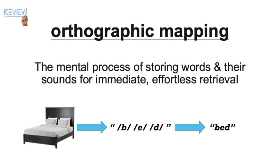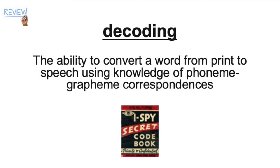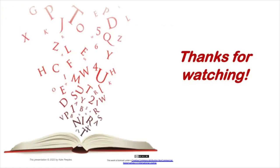It's important to remember that for a lot of children with and without disabilities, that retrieval isn't immediate or effortless right away. All students can benefit from explicit phonemic awareness instruction early on. Lastly, we defined decoding as the ability to convert a word from print to speech using knowledge of phoneme-grapheme correspondences. Those connections can also be called orthographic maps. That's all for this video. Thanks for watching.